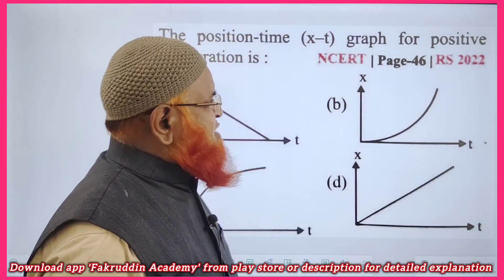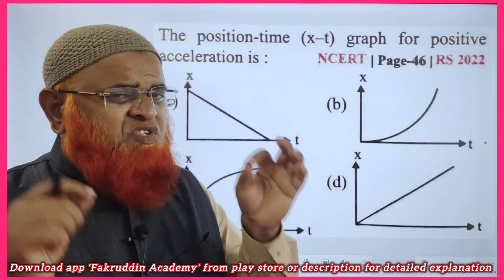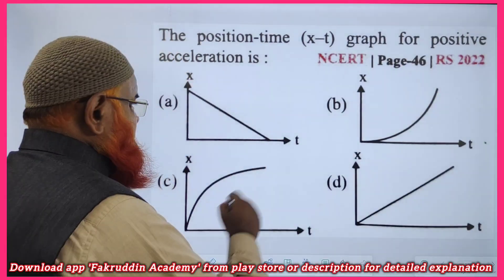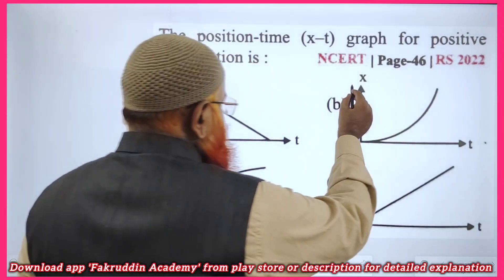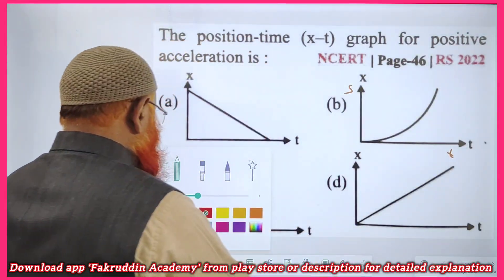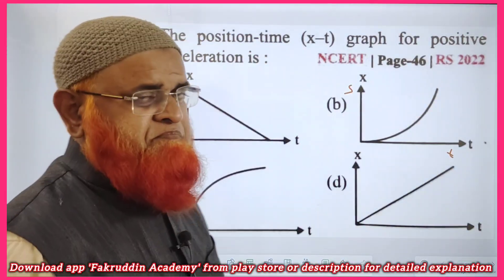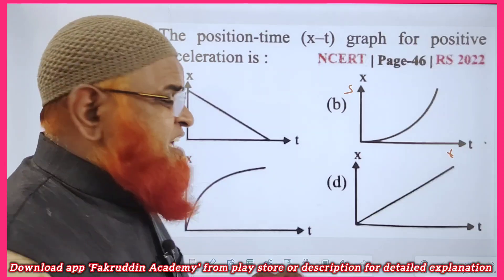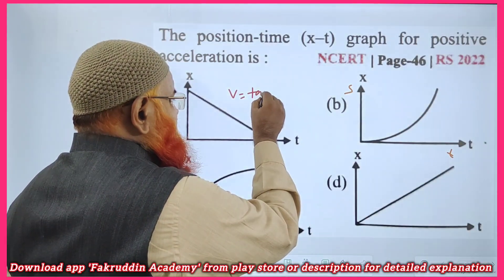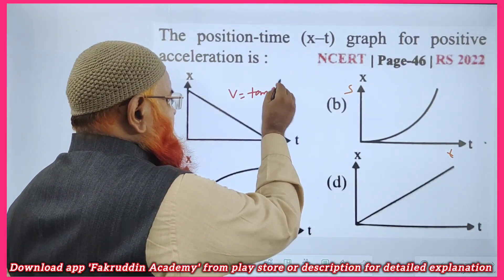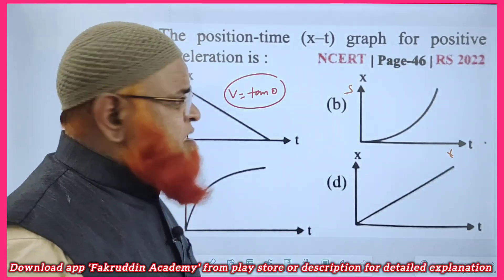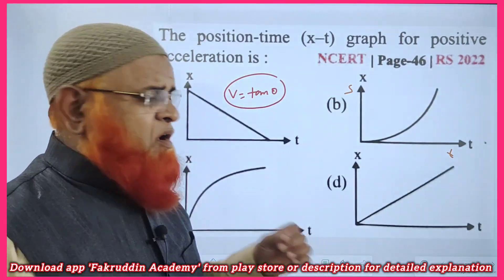These are the 4 graphs representing position-time graphs, also called displacement-time graphs. In displacement-time graphs, if you want to find out the velocity, it is nothing but tan theta — the slope of the graph gives you velocity.